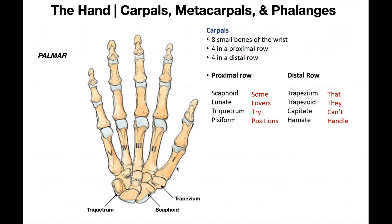That leads us to talking about the metacarpals. There is one metacarpal per digit, so there are five total metacarpals per hand. With the carpals, it was just useful to start talking about them on the thumb side, partially because of the mnemonic. But when we start talking about the metacarpals and naming the digits one through five, we have to start on the thumb side. By definition, the thumb is digit one, and the digiti minimi, or the pinky, is digit five. So this metacarpal would be metacarpal one, metacarpal two, metacarpal three, metacarpal four, and metacarpal five. Every single digit has one metacarpal.